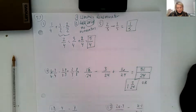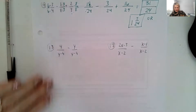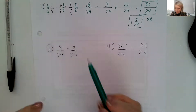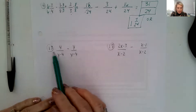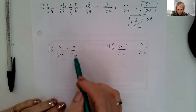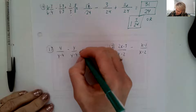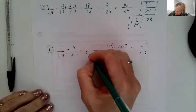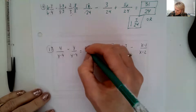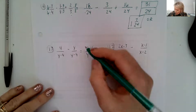But we're not going to be doing just numerical fractions — we're going to be doing rational expressions with variables. On number thirteen, we have four over y minus four, subtracting y over y minus four. We have a common denominator, so that stays y minus four, and we subtract our numerators: four minus y. That's all we can do because we don't know the value of y.